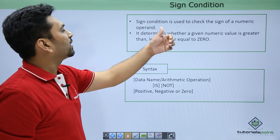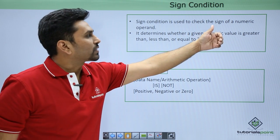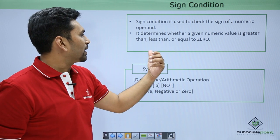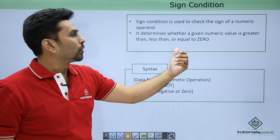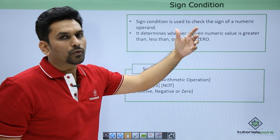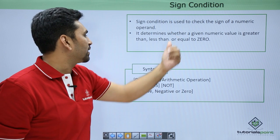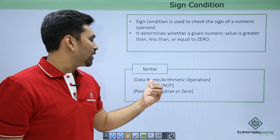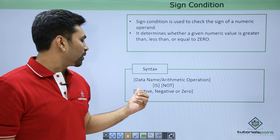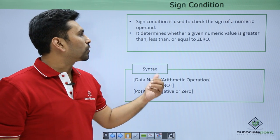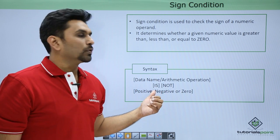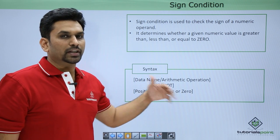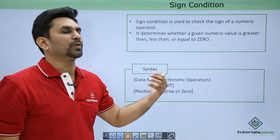Sign condition is used to check whether the sign of a numeric operand is positive, negative, or zero. The syntax is: data-name IS [NOT] POSITIVE / NEGATIVE / ZERO. We can check all these values — for example, if a variable is negative, display a message and perform an operation.